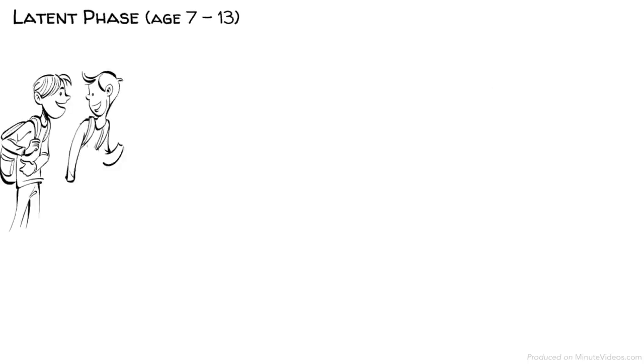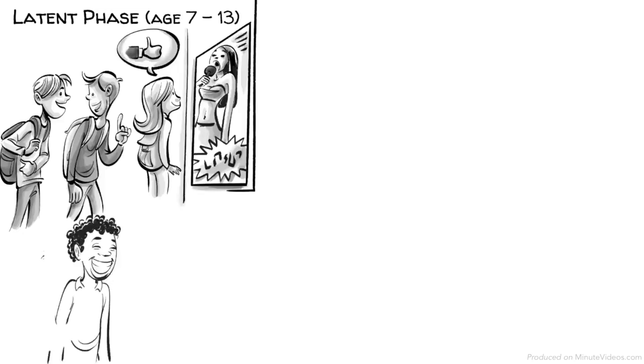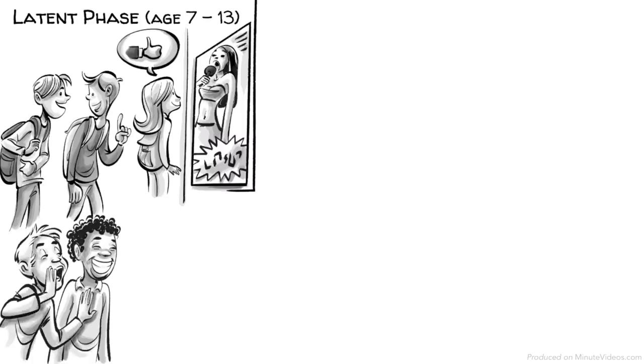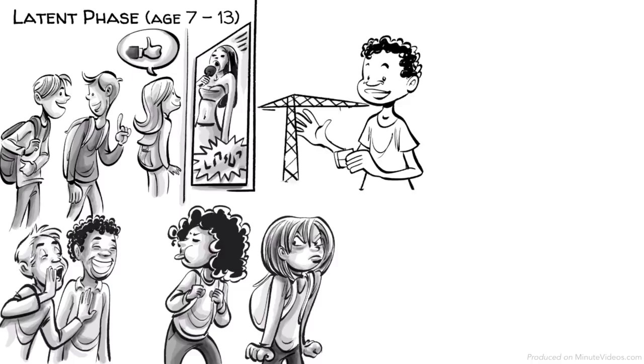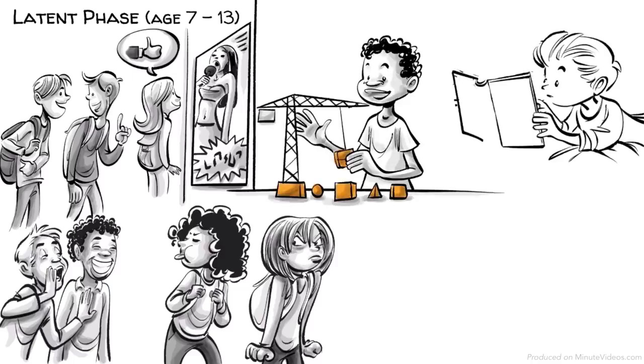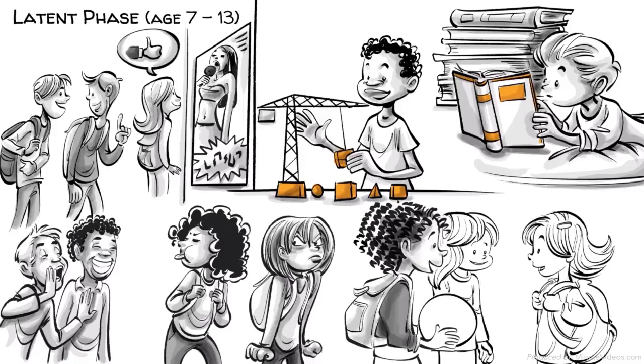Latent phase, age seven to thirteen. In this phase, our libido is suppressed as our sexual energy is being sublimed into developing life skills. Our super ego strengthens and we strongly identify with social values, same-sex heroes and friends. Hans follows many hobbies. Ernst loves learning at school and Ida makes lots of new girlfriends.